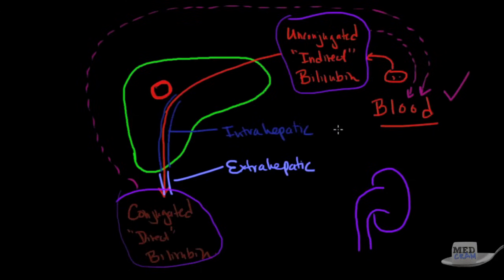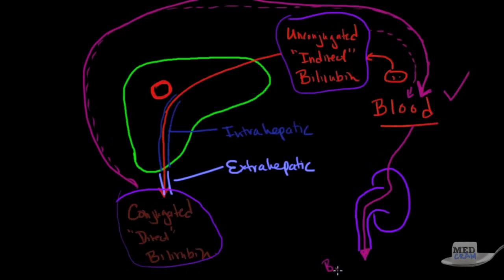However, only one of these things, and that is specifically the conjugated bilirubin, because it's conjugated, it's more water-soluble, is going to be able to make it through the blood and actually get excreted out through the kidney. And so if you see bilirubin urea, that is the presence of conjugated bilirubin in the blood. You will not see unconjugated bilirubin being passed through the kidney. So if you see bilirubin in the urine, that means you must have conjugated bilirubin in the blood, and that means either intrahepatic or extrahepatic obstruction.